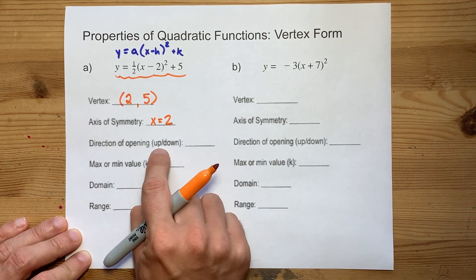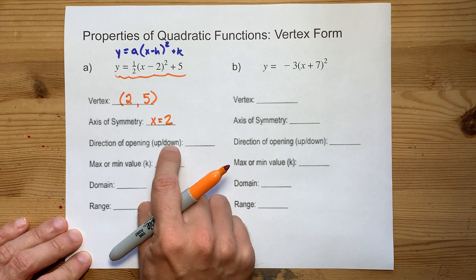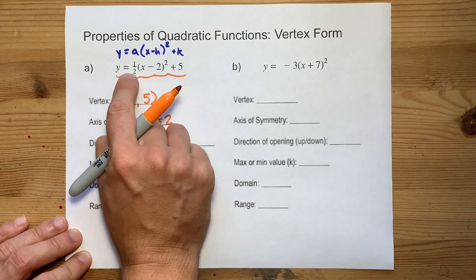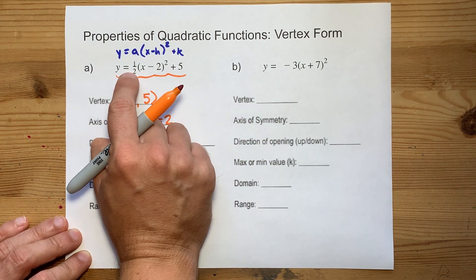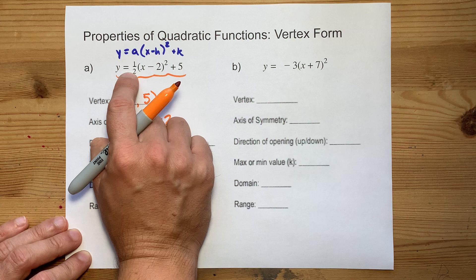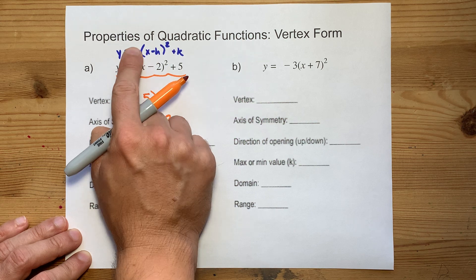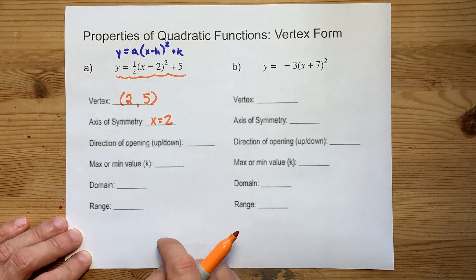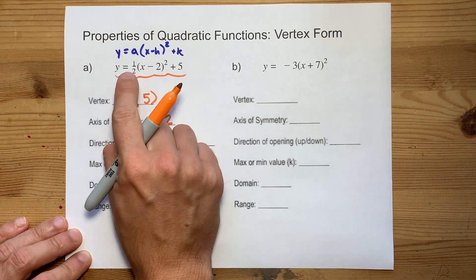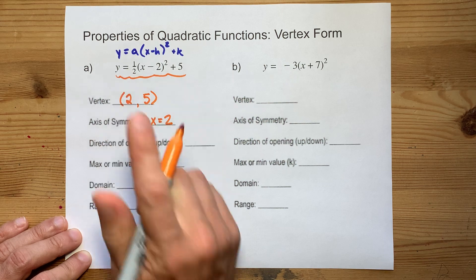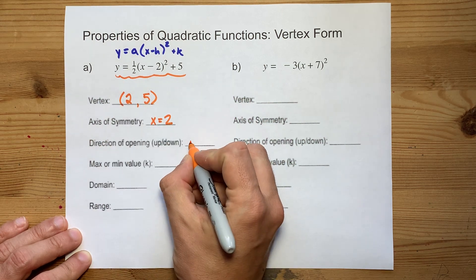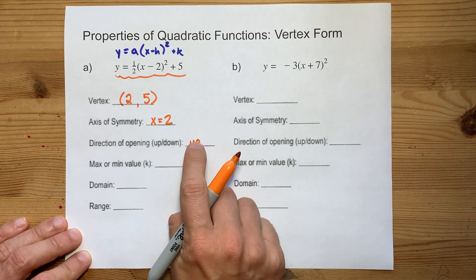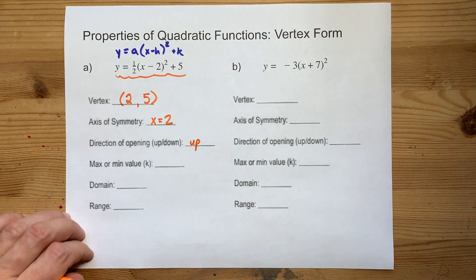Direction of opening is either up or down, and that's controlled by whether or not there's a negative in front of the whole equation — in front of the a value. There is not a negative here; it is positive, so the parabola opens up.